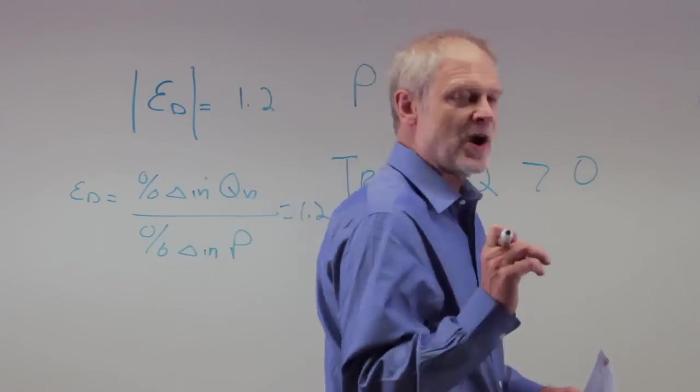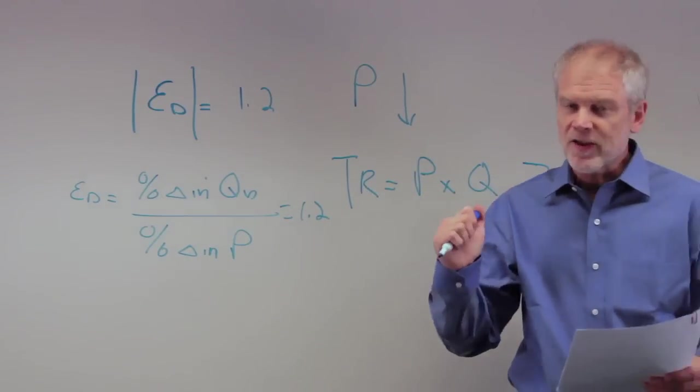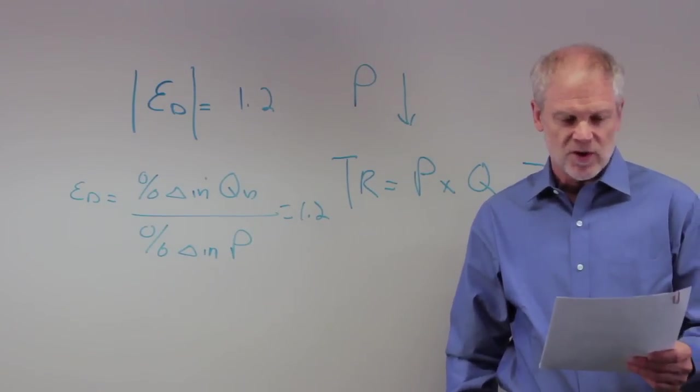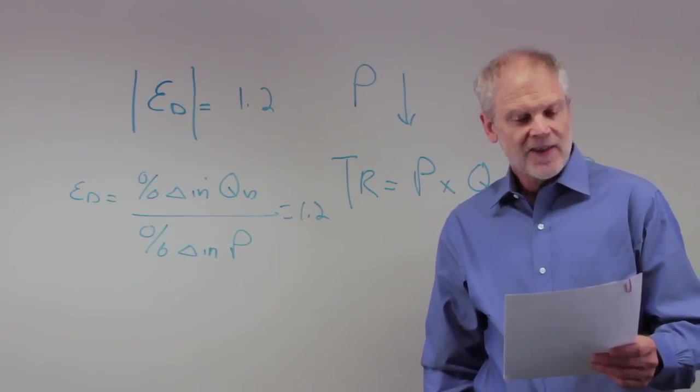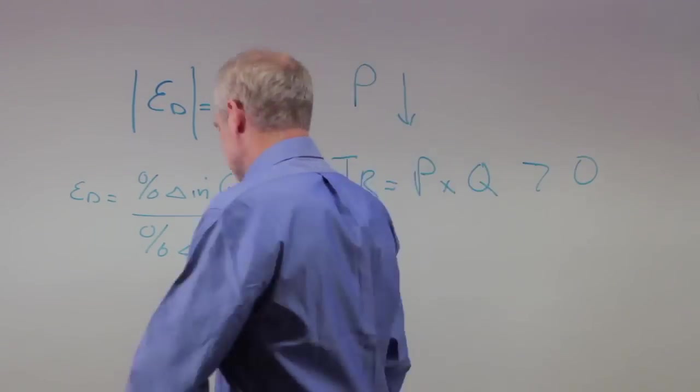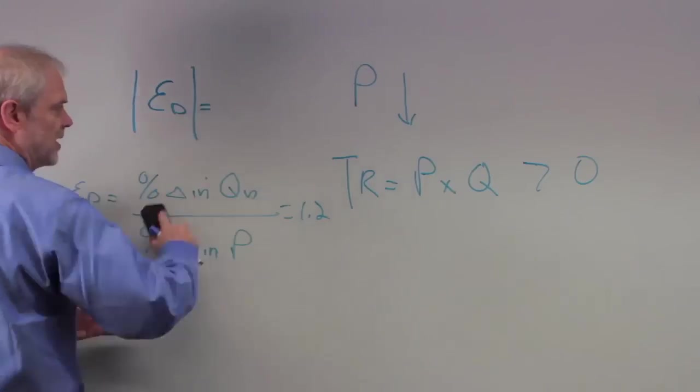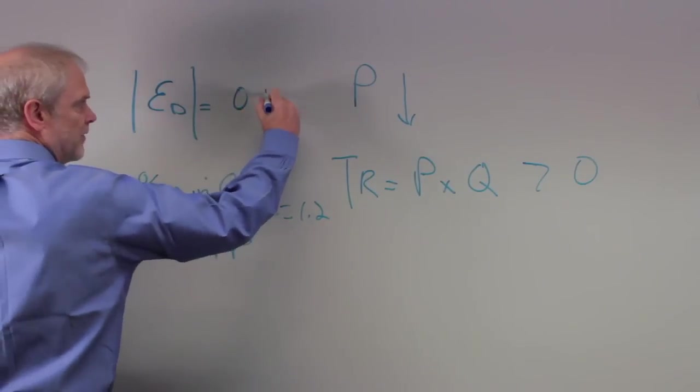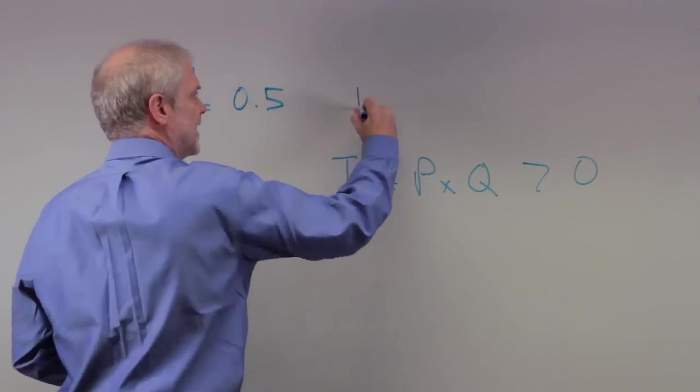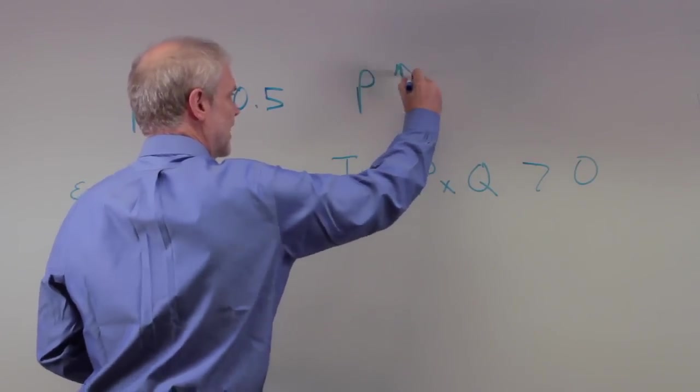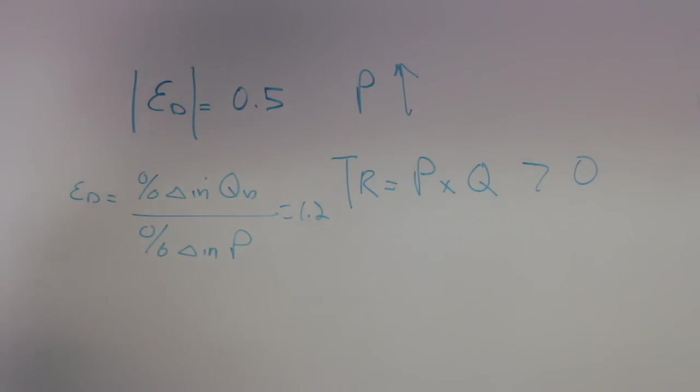Because this question involves all of the above, you have to walk through every single one of these. It says the price elasticity of demand is 0.5, and the price of the good increases. So now you've got elasticity of demand 0.5, and now the price of the good increases in this particular case. So what's going to happen in this case?